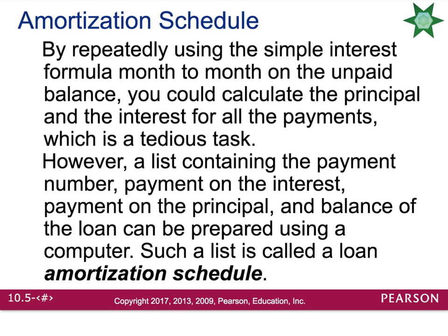An amortization schedule: if you repeatedly use the simple interest formula month to month on the unpaid balance, you can calculate the principal and interest for all payments, but it can be very tedious. A list containing the payment number, payment on the interest, payment on the principal, and balance of the loan can be prepared on a computer — this is called your amortization schedule. When you look at your project, it asks you to calculate a few different amortization schedules, and I should walk you through how to do this using Microsoft Excel.